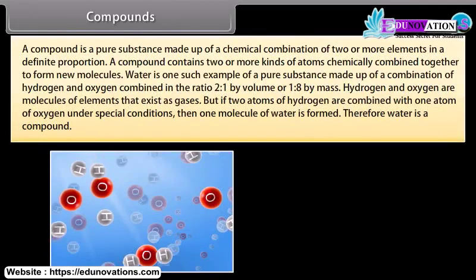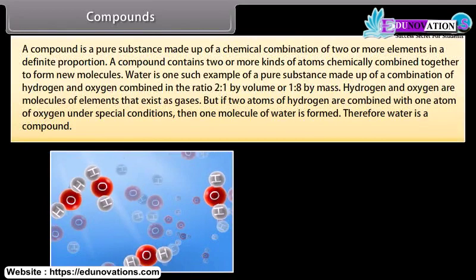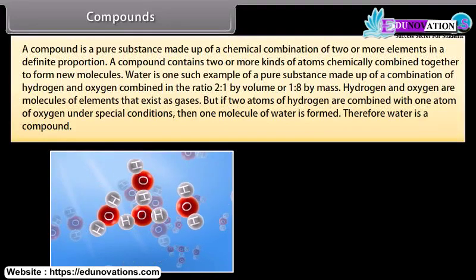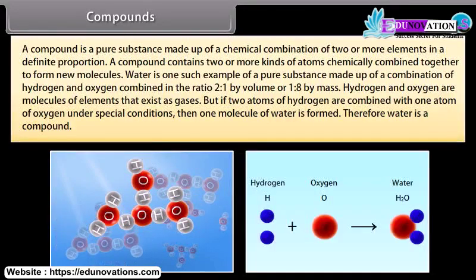A compound is a pure substance made up of a chemical combination of two or more elements in a definite proportion. A compound contains two or more kinds of atoms chemically combined together to form new molecules. Water is one such example of a pure substance made up of a combination of hydrogen and oxygen combined in the ratio of 2:1 by volume and 1:8 by mass. If two atoms of hydrogen are combined with one atom of oxygen under special conditions, then one molecule of water is formed. Therefore, water is a compound.